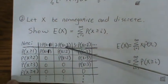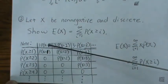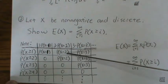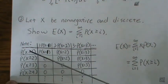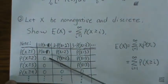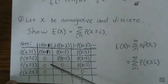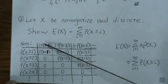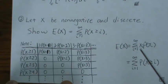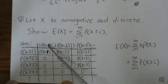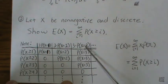Adding column by column gives: 2 times P(X=2), 3 times P(X=3), 4 times P(X=4). That's exactly the expected value of x — the sum of x times the probability of that x — which is 1·P(1) + 2·P(2) + 3·P(3) + 4·P(4).